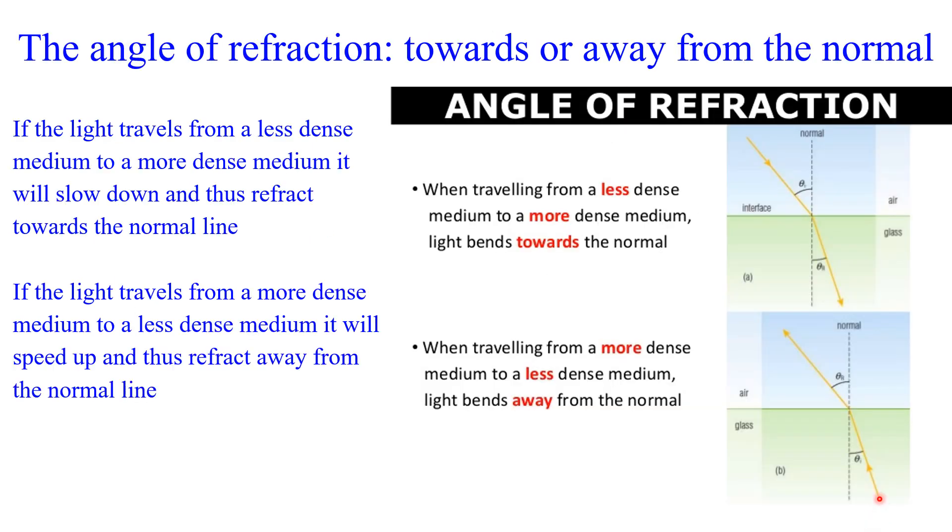The opposite will occur if we have our incident ray transmitted through a more dense medium like glass, and then we break through the divide between these two media and go to a less dense arrangement of particles. In this case, the light will speed up in terms of its frequency and bend away from the normal line.